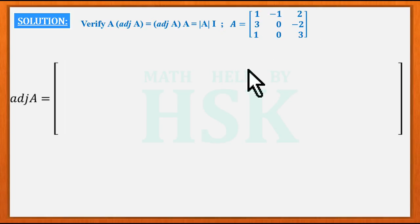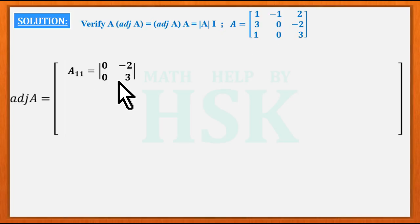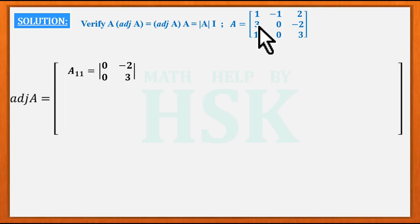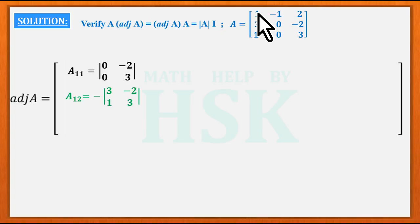For the element a11, the cofactor would be equal to the determinant of [0, -2 / 0, 3]. For the second element a12, the cofactor would be given by minus of the determinant [3, -2 / 1, 3]. The cofactors of all elements in the leading diagonals — formed by 1, 0, 3 and 2, 0, 1 — are equal to the minors.